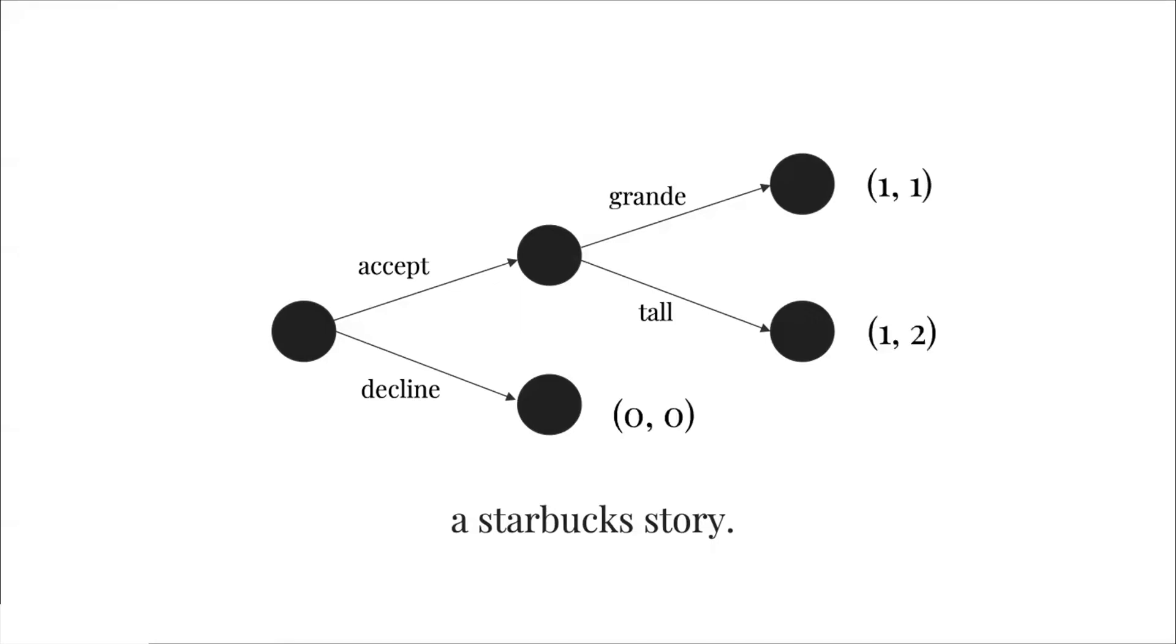If we say, for example, that getting a tall is better than a grande because of the reduced sugar consumption, then we're going to assign a higher payoff to tall than grande. Extrapolating backwards, if we say accepting that offer is better than declining because it would be nice to meet someone you haven't seen in a while, then we give a higher payoff to accept than decline, and that is why one is greater than zero.